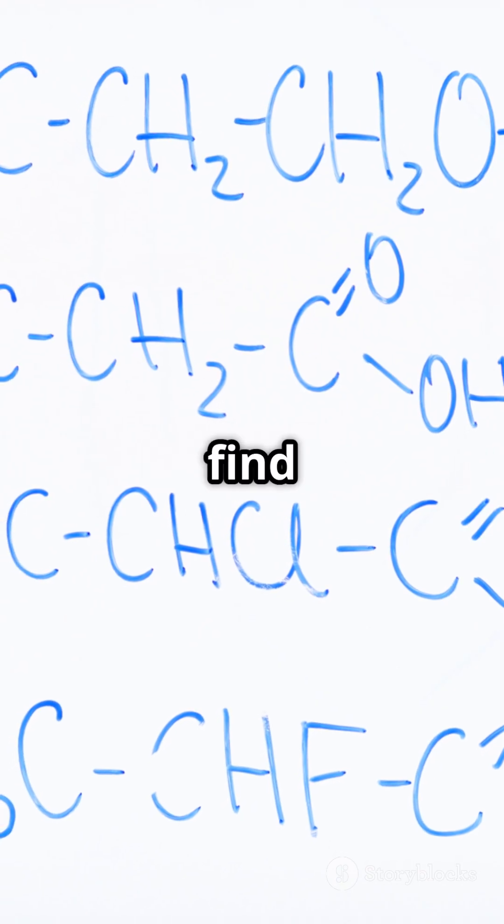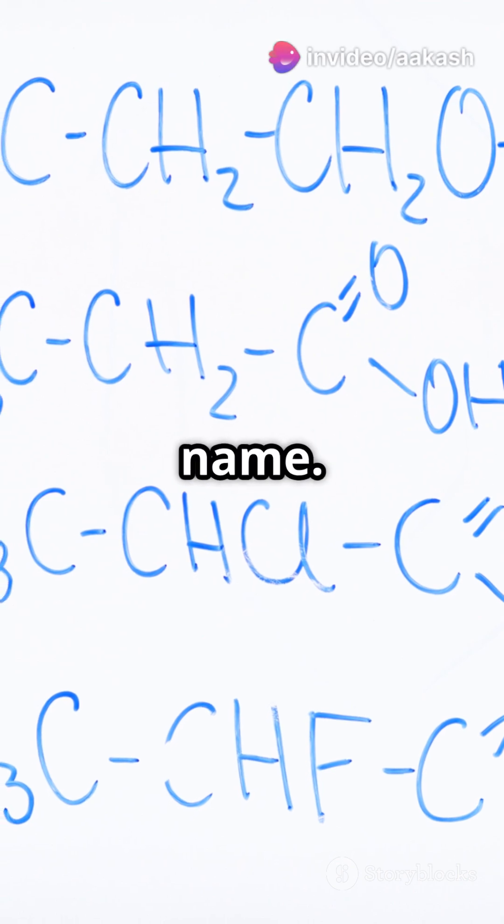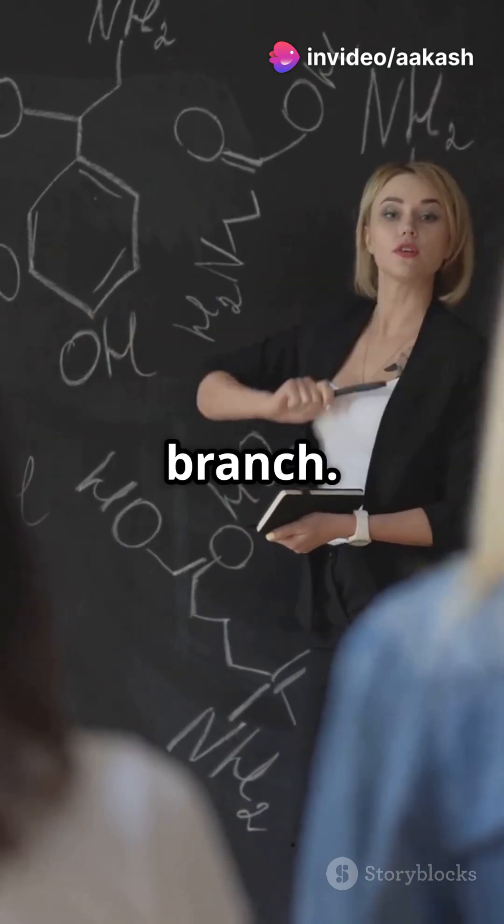When branches appear, find the longest chain, that's your parent name. Then number the chain from the end closest to a branch.